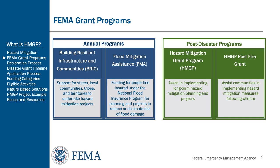FEMA offers several mitigation grant programs. They can be separated into two categories based on their funding type. On the left-hand side, we have the Building Resilient Infrastructure and Communities Program, also known as BRIC, and the Flood Mitigation Assistance Program, also known as FMA.